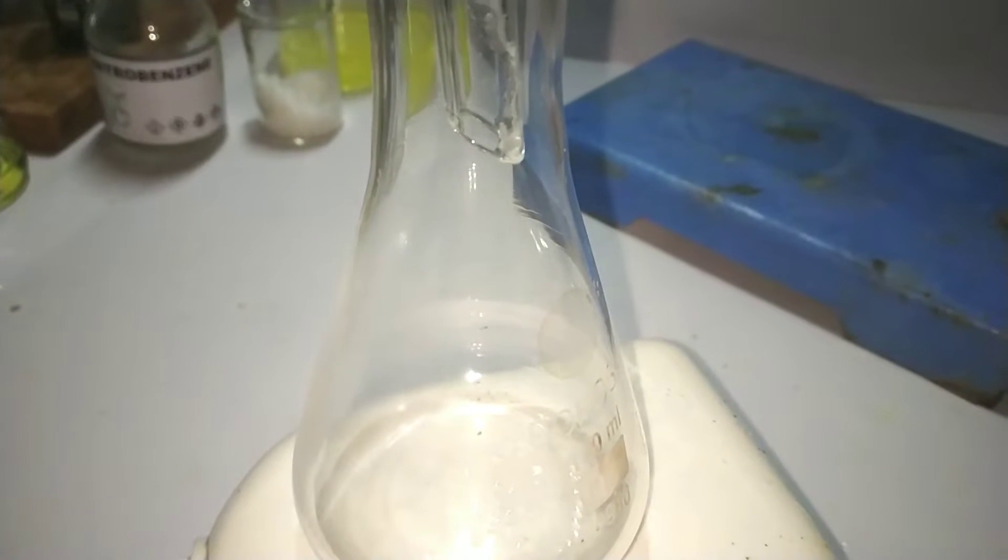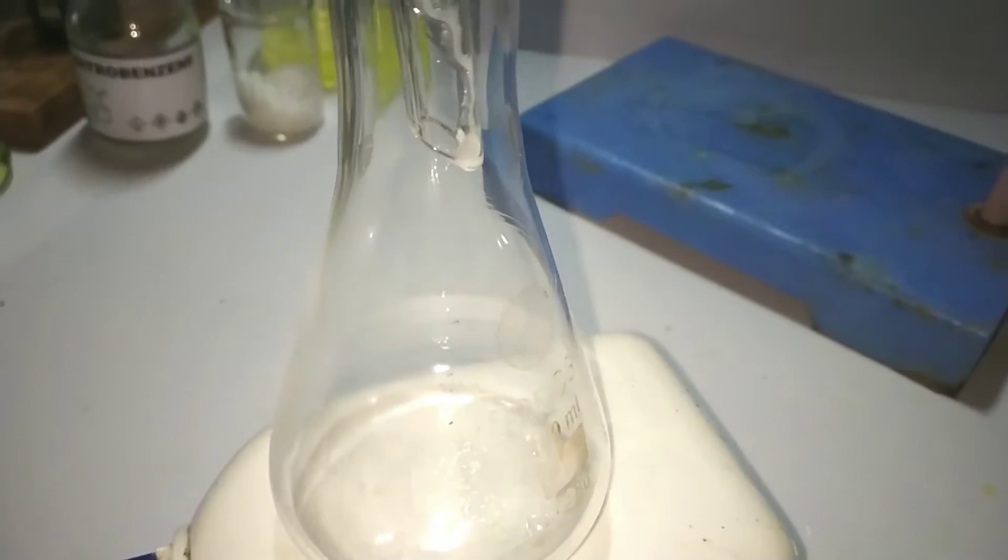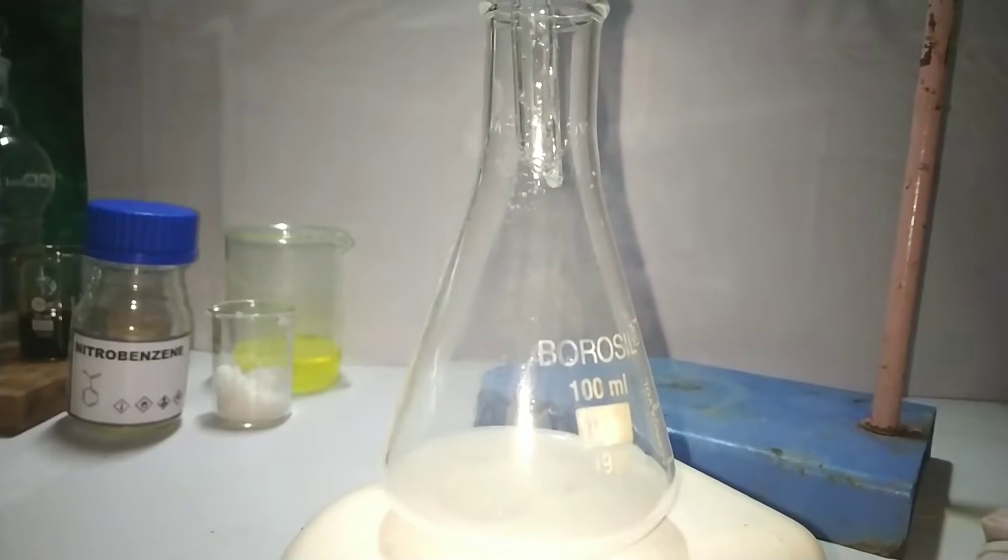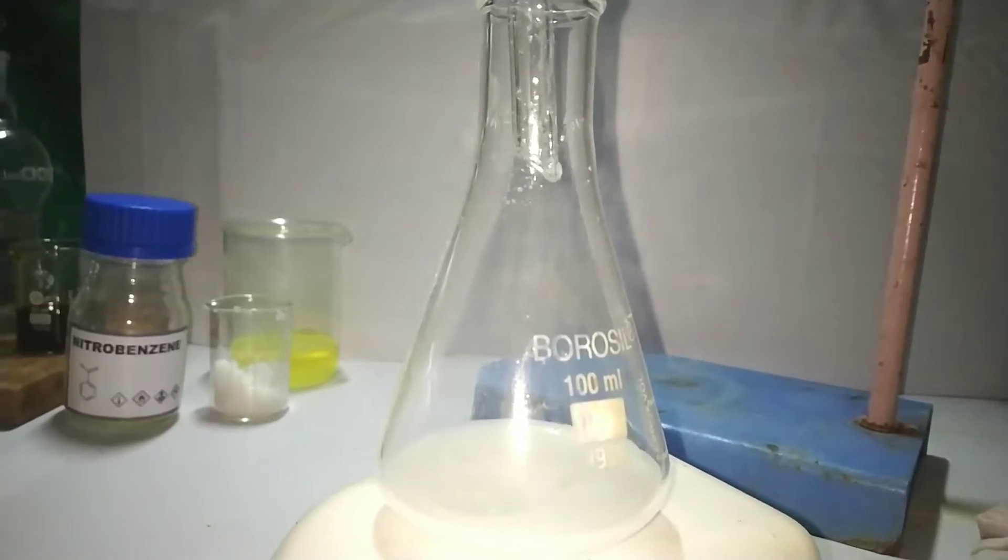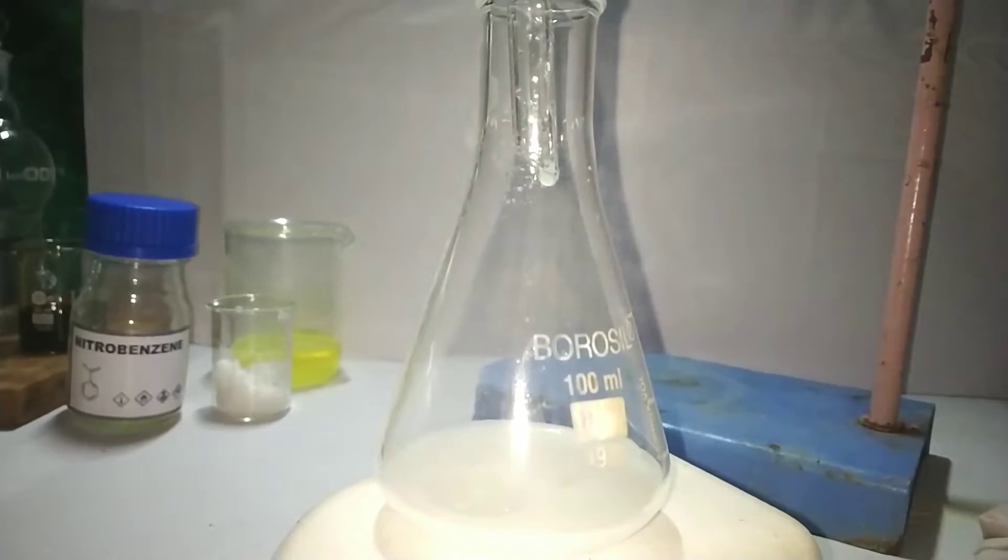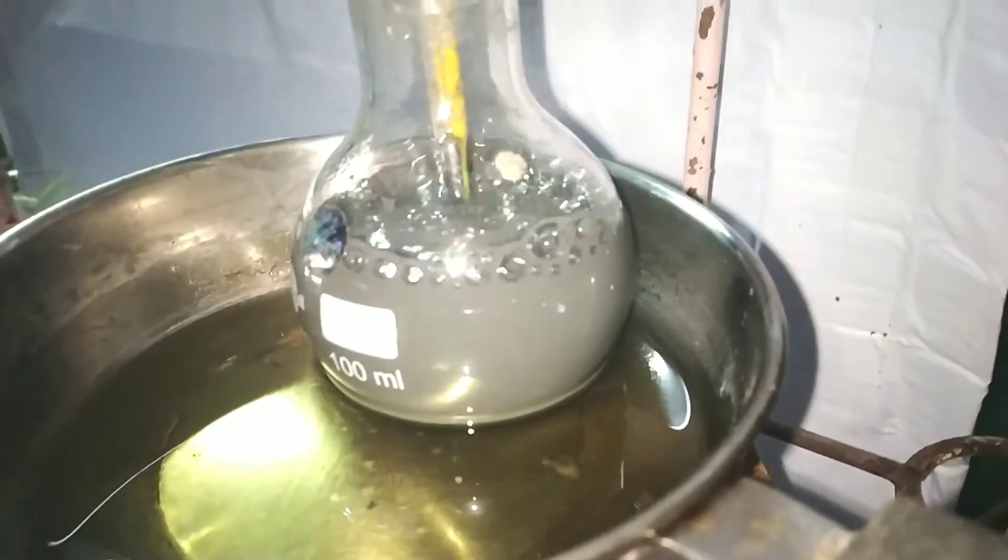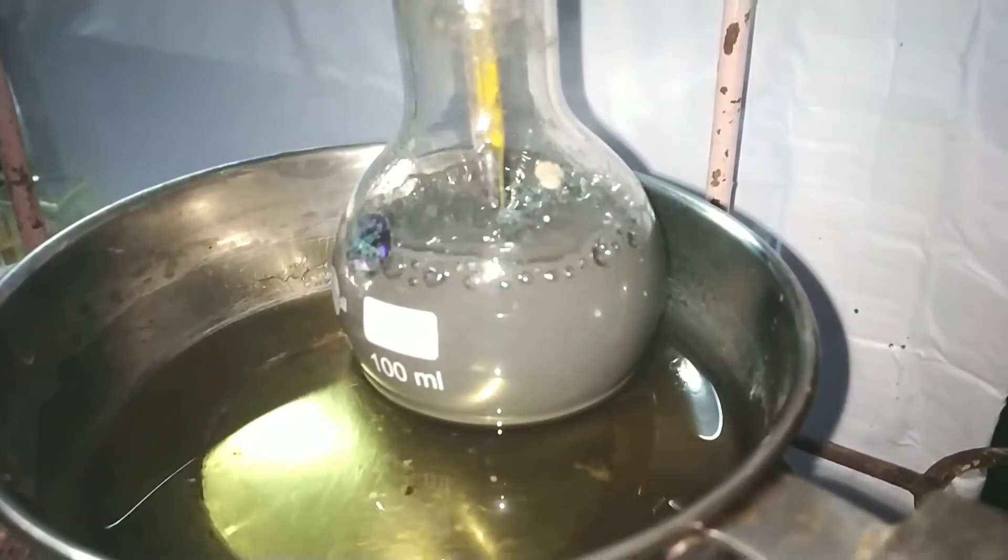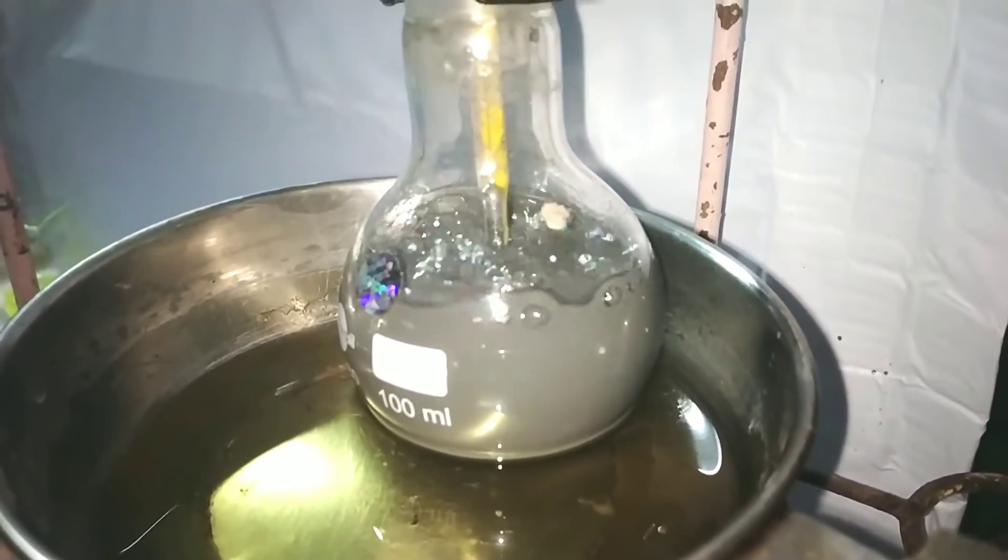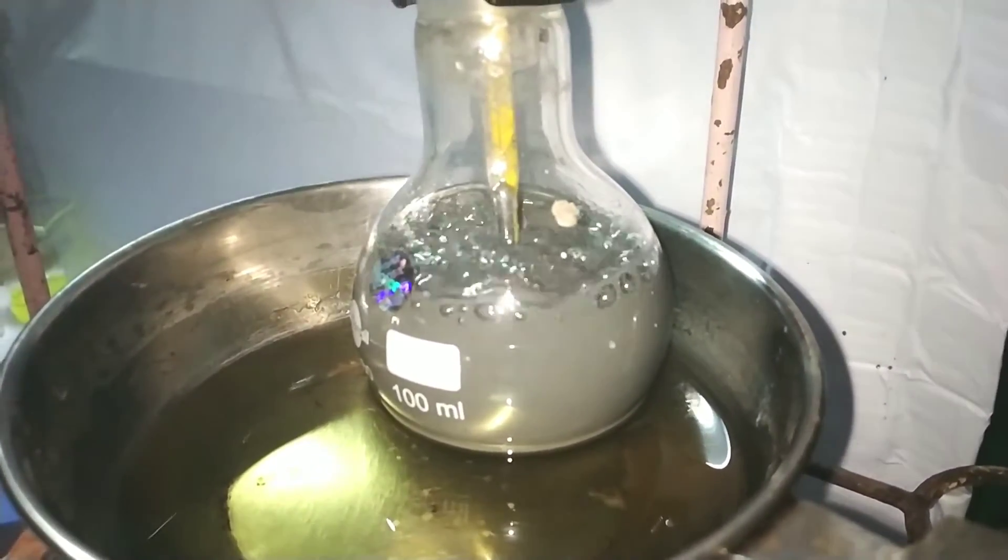Collect around 50 ml of the distillate. After that you can see no more oily droplets are coming out. The distillation flask will have a black colored solution. Now we can stop the distillation.